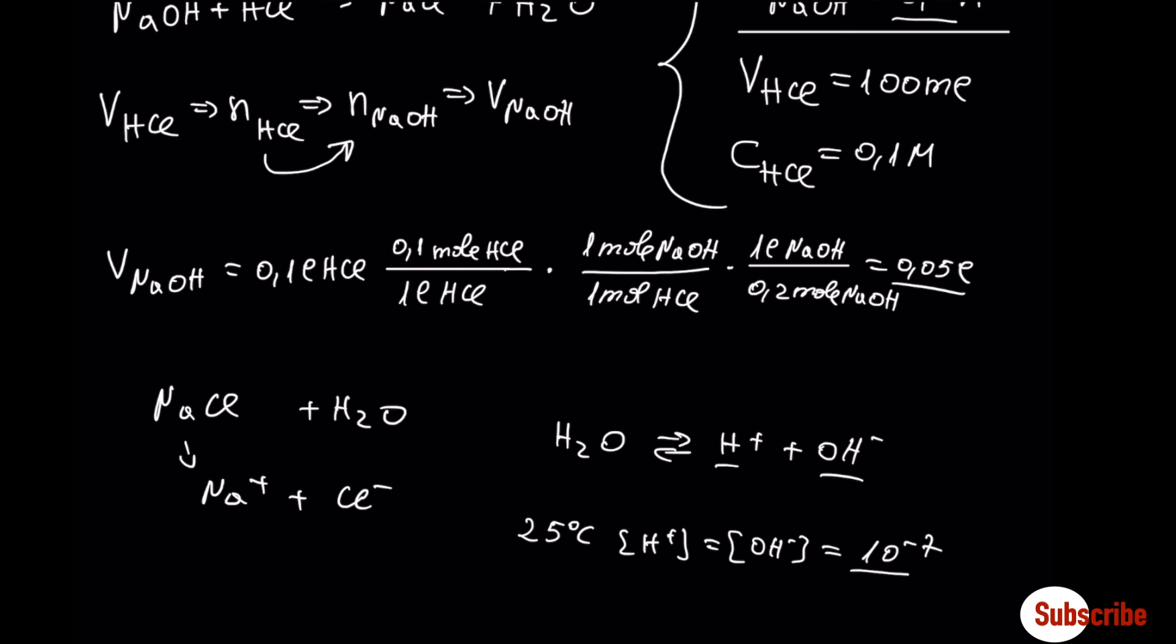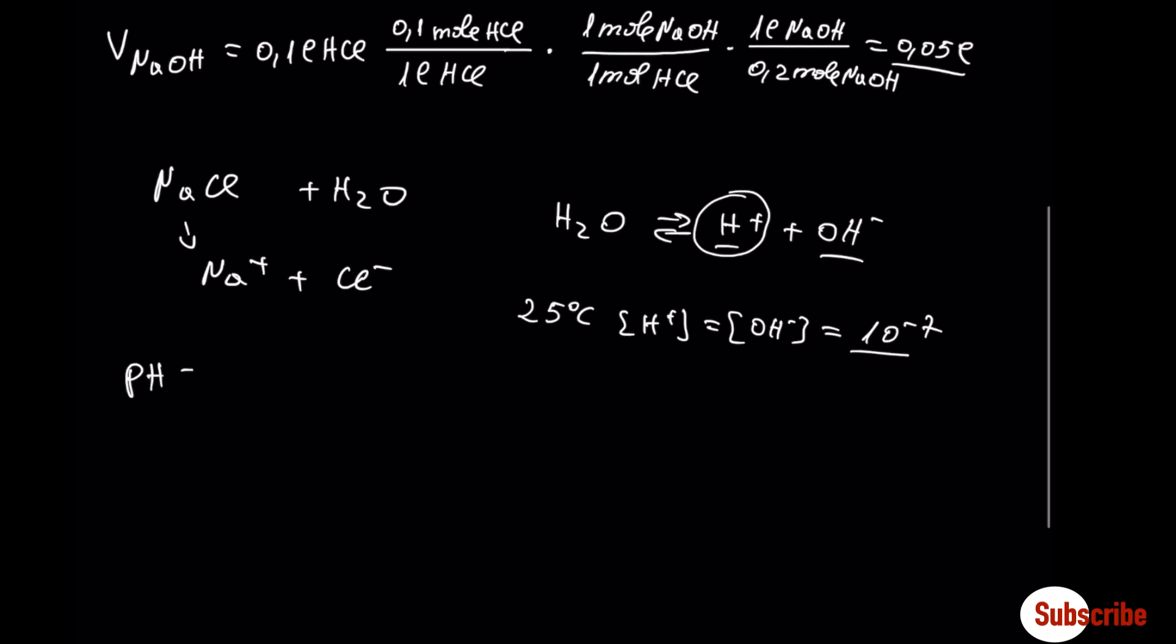From this value, we are going to find the pH of the solution. The pH of the solution is equal to 7. We can say that the solution is neutral.